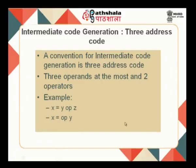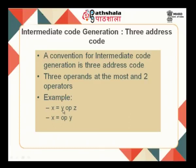One example of intermediate code is 3-address code, which can have at most 3 operands and 2 operators, where one of the 2 operators has to be an assignment operator. Examples are: x = y op z, or x = op y. Here y, z, x are the 3 addresses, and there is one operator plus an assignment operator.